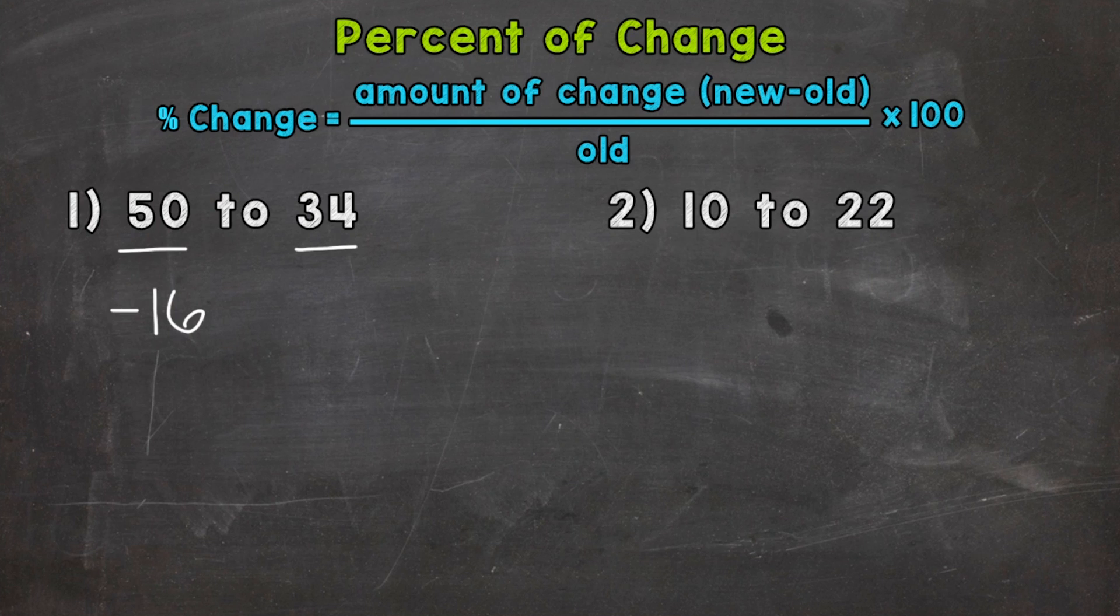Divide that by the old or original number of 50, and then multiply by 100 to convert that to a percent. It's very important to always divide by the old or original number because that's the number that changed. So we want the percentage change relative to the number we started with. We're looking at the percent that that number changed.